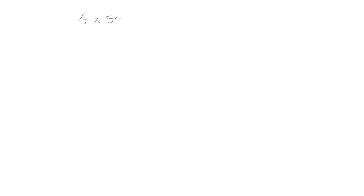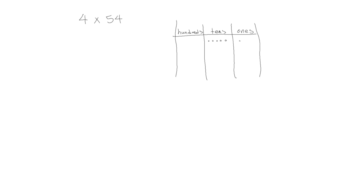Let's try another one: 4 times 54. Let's draw a place value chart. We're going to show 54 as 5 tens and 4 ones, 4 times. So we've shown 54 four times.